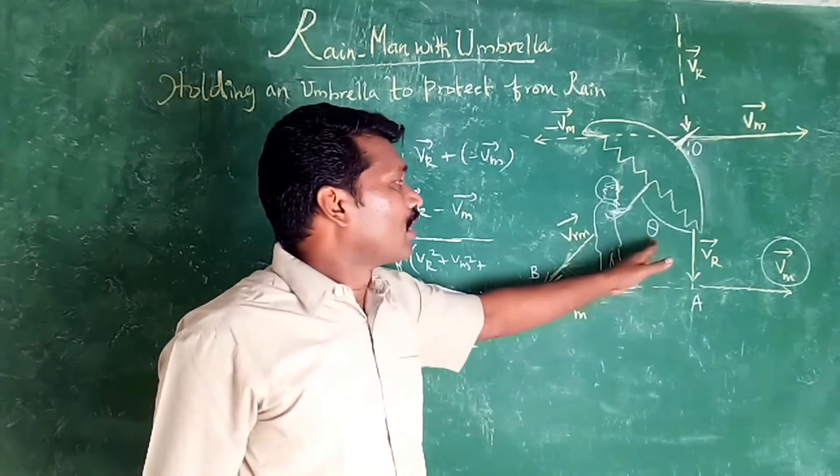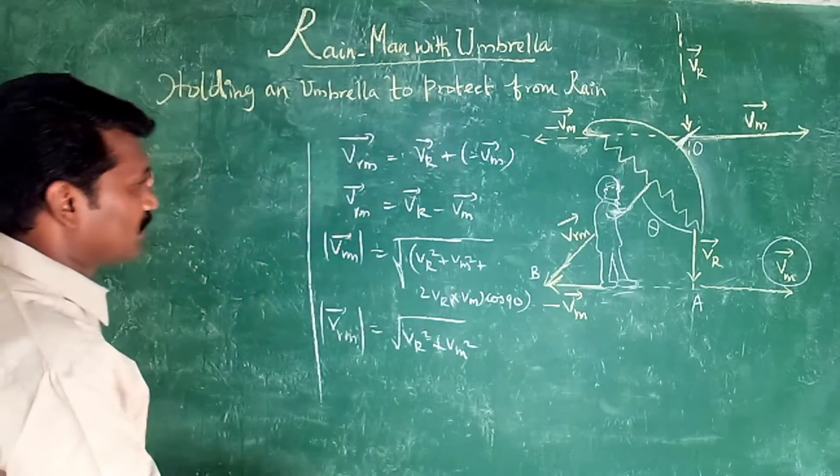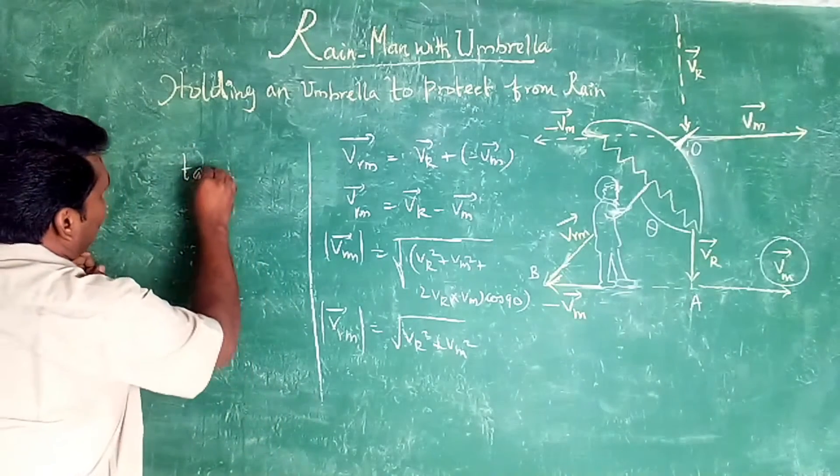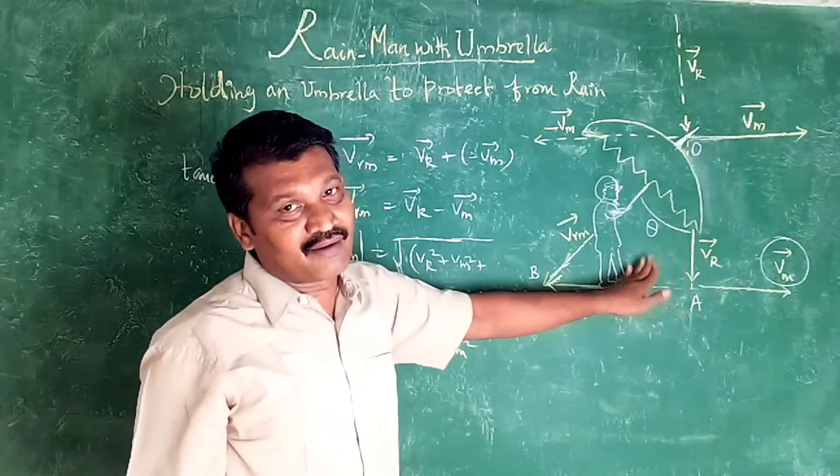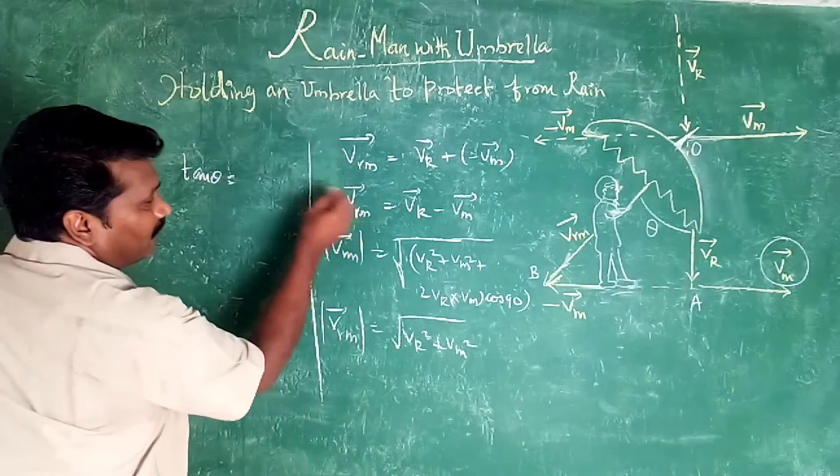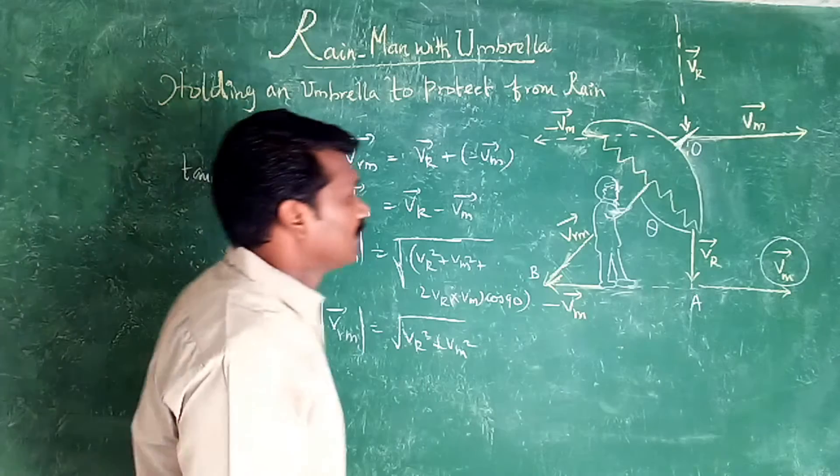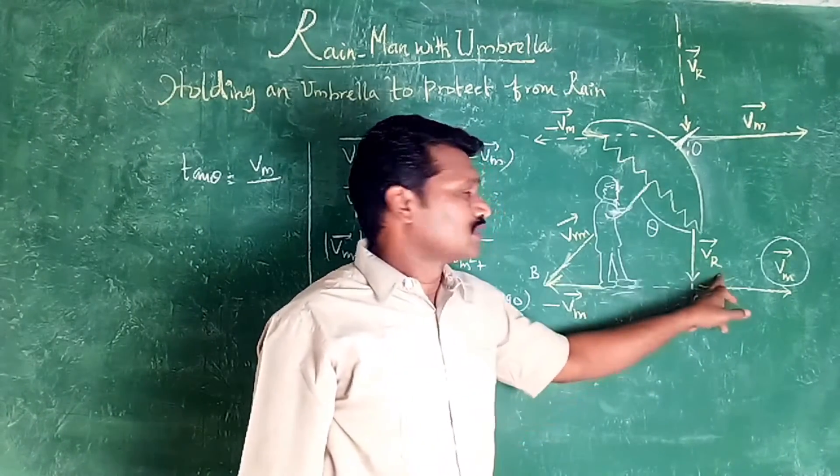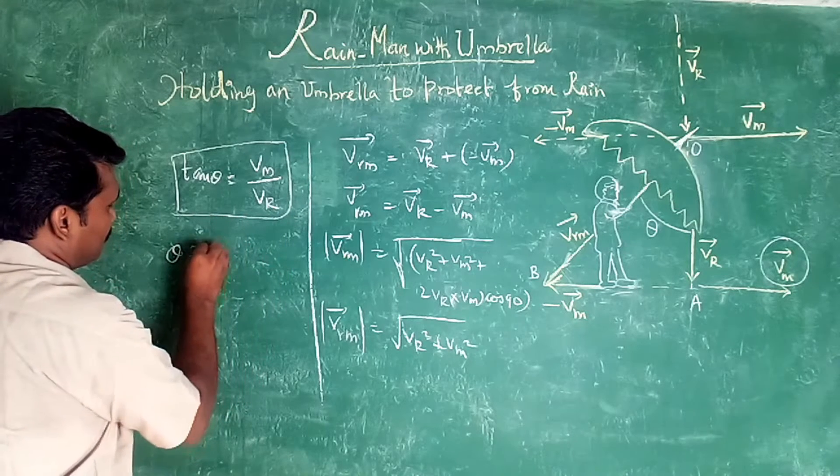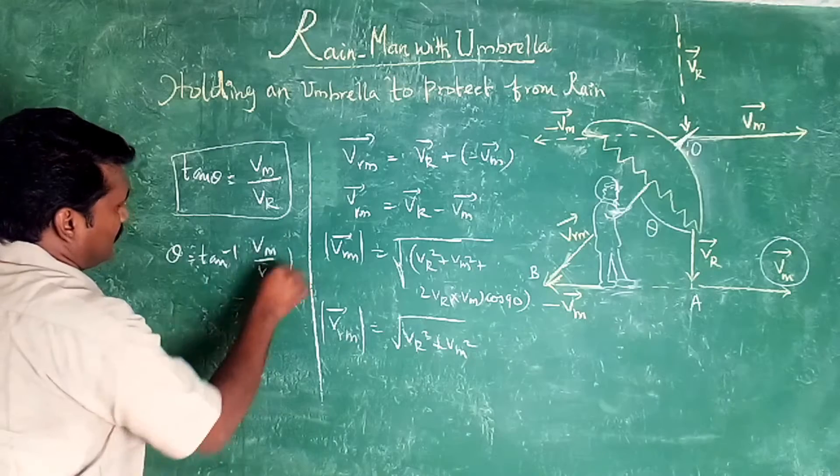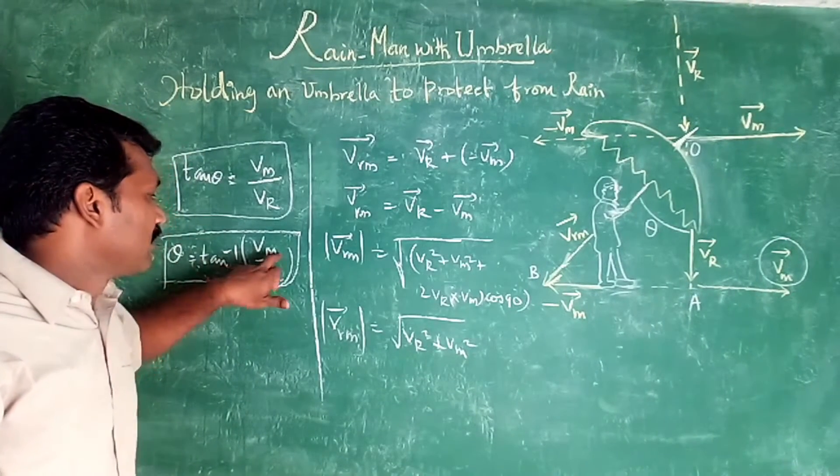So our man needs to hold his umbrella to protect from the rain. We have to find the theta value. So tan theta equal to opposite side by adjacent side. So theta equal to tan inverse of Vm by Vr.